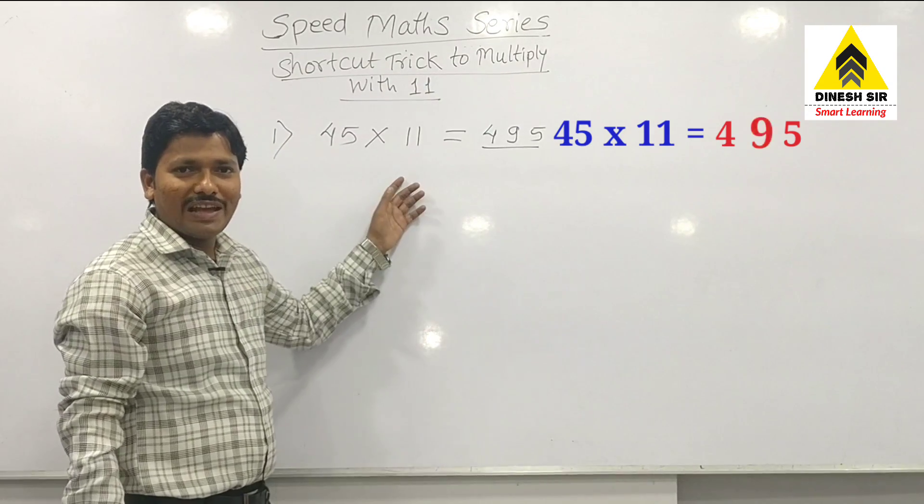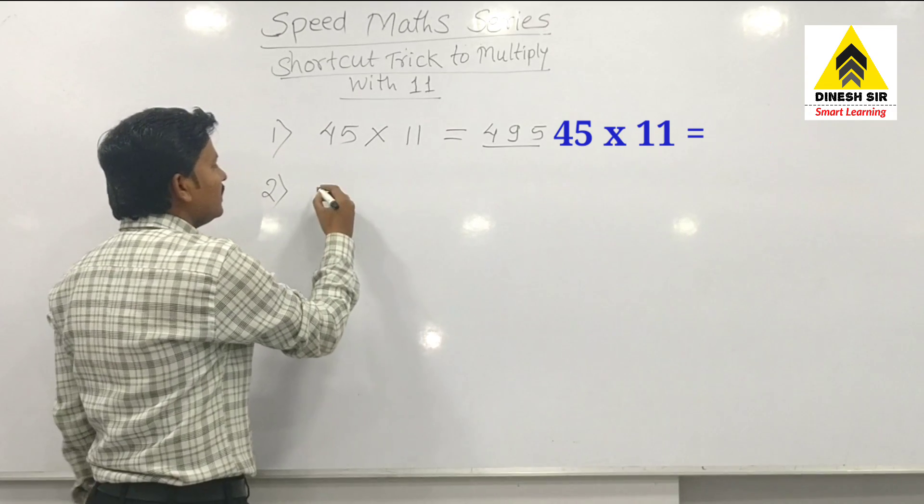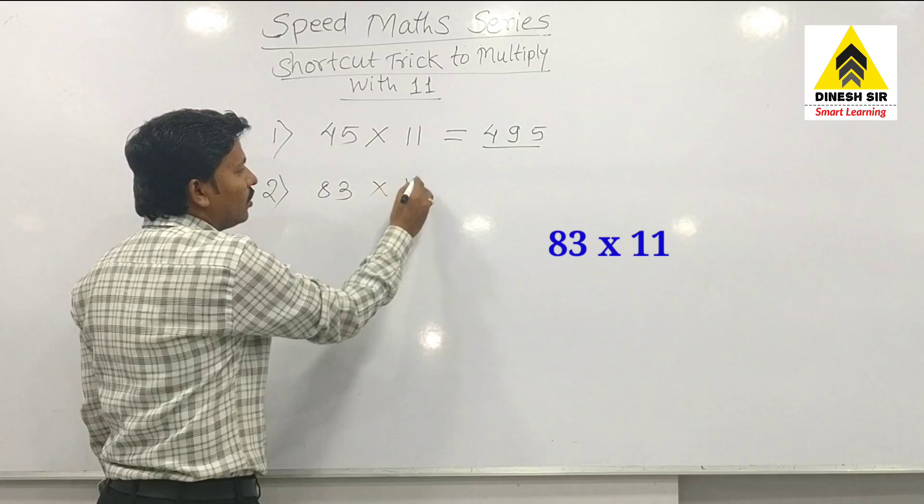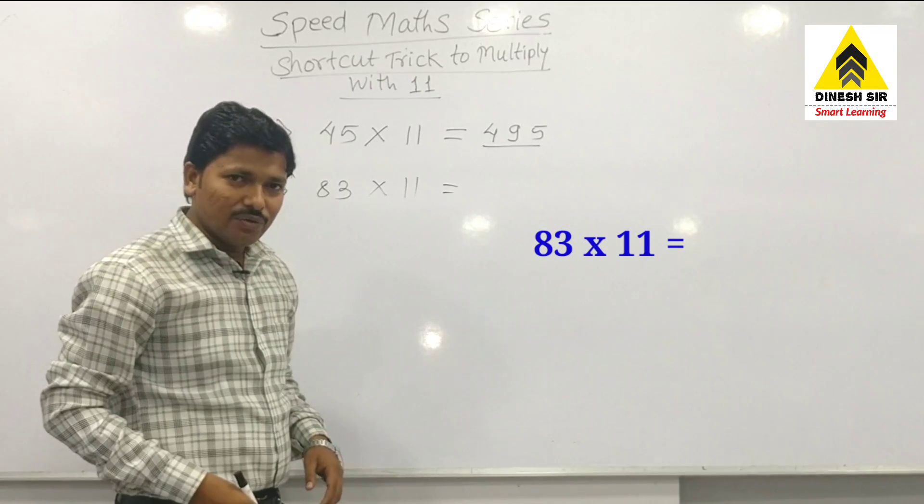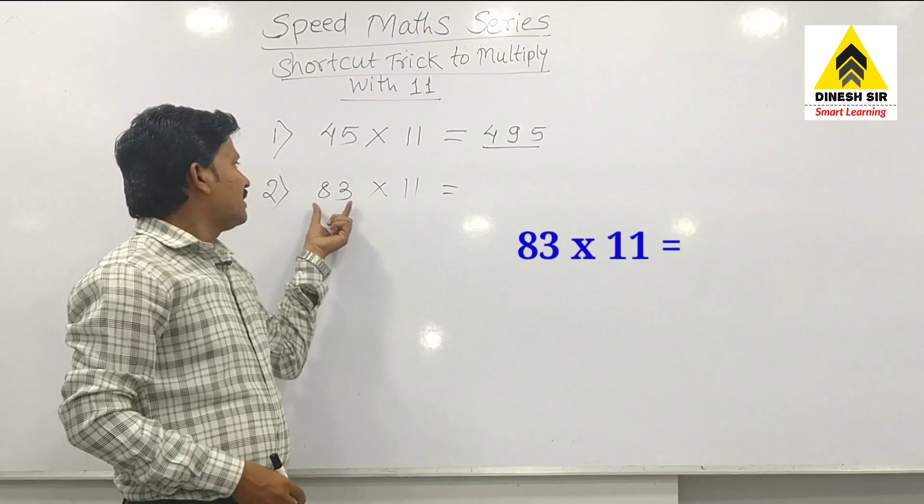Similarly, suppose I am giving the second example. You have 83. Now you want to multiply with 11. While multiplying with 11, what is the trick I explained? Just here in the first example, write these two digits separated by a gap.